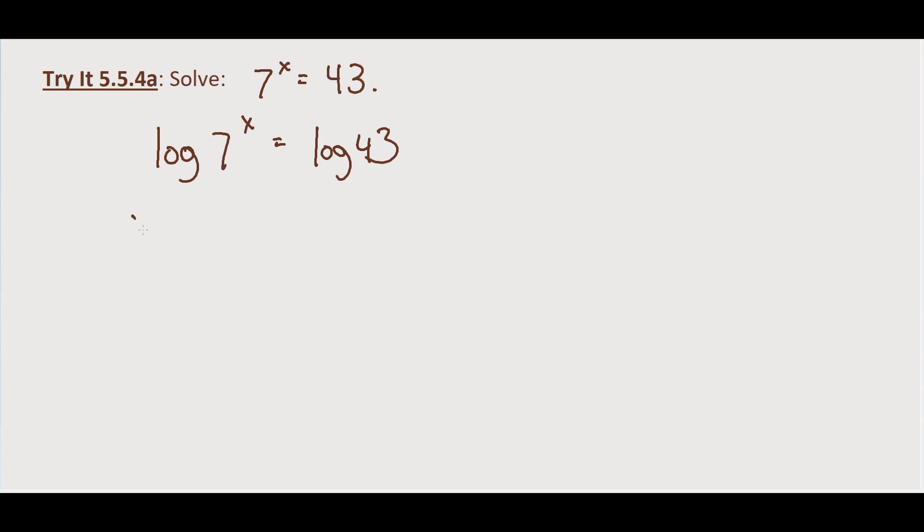We use the power property. This becomes x log of 7 equals log of 43. So x equals log of 43 divided by the log of 7.